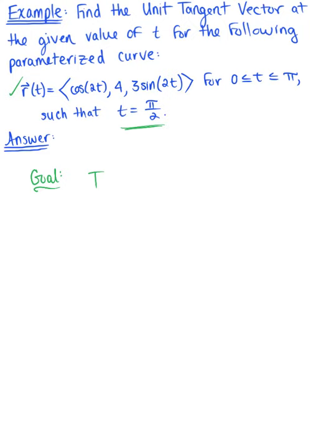We need the unit tangent vector evaluated at π/2. So we are going to need to calculate the tangent vector and then evaluate this at π/2, and then divide that by its length. This is the goal here. This is what we are going to go about finding.